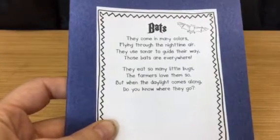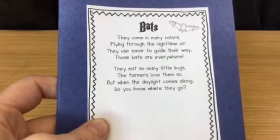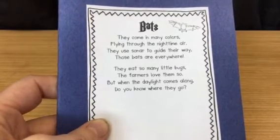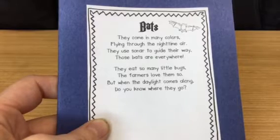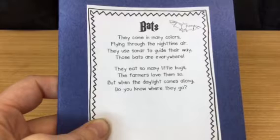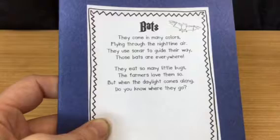If you're watching this video, you have read this poem. Let me read the poem to you. Bats. They come in many colors, flying through the nighttime air. They use sonar to guide their way. Those bats are everywhere. They eat so many little bugs. The farmers love them so. But when the daylight comes along, do you know where they go?